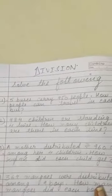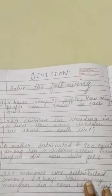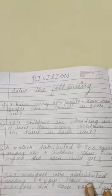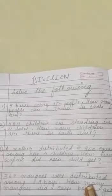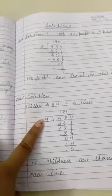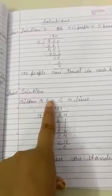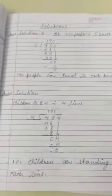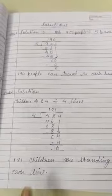Now moving on to the second question: 484 children are standing in four lines. How many children are there in each line? We will get equal number of students in one line. In one line, how many students will stand? We will get that.